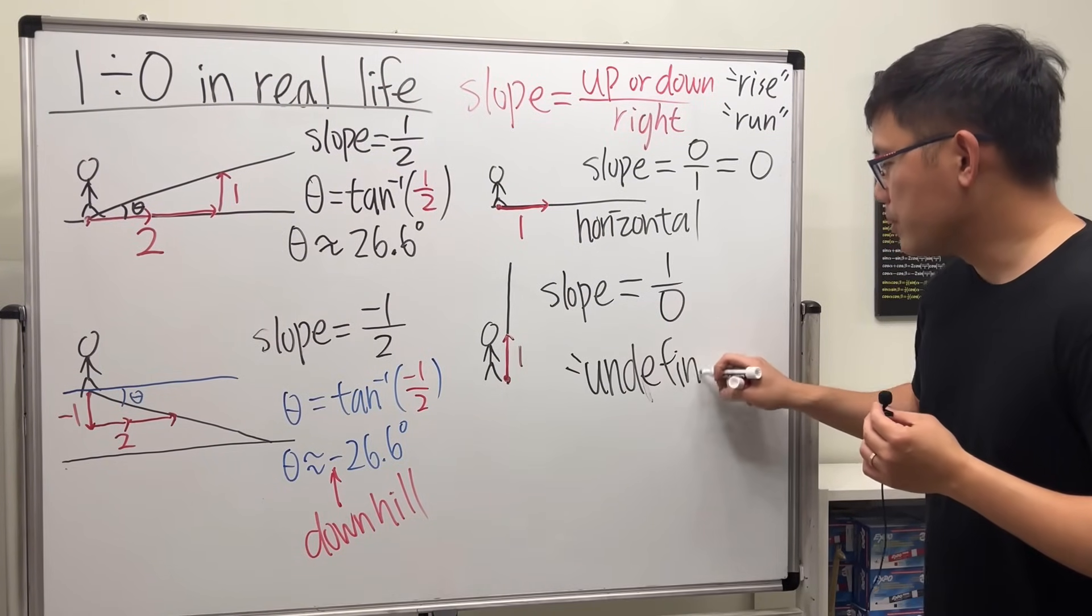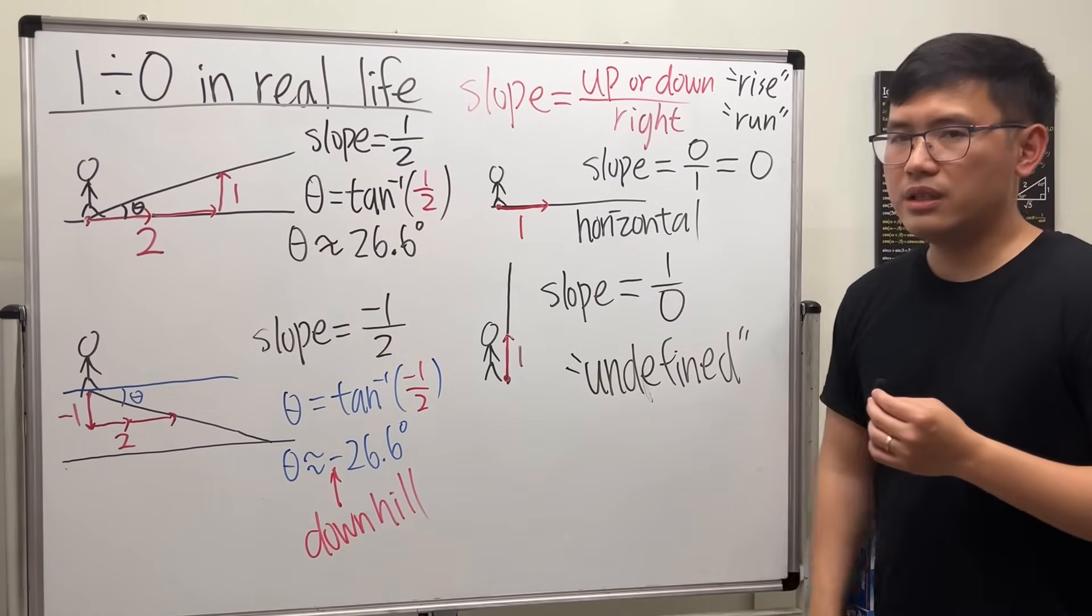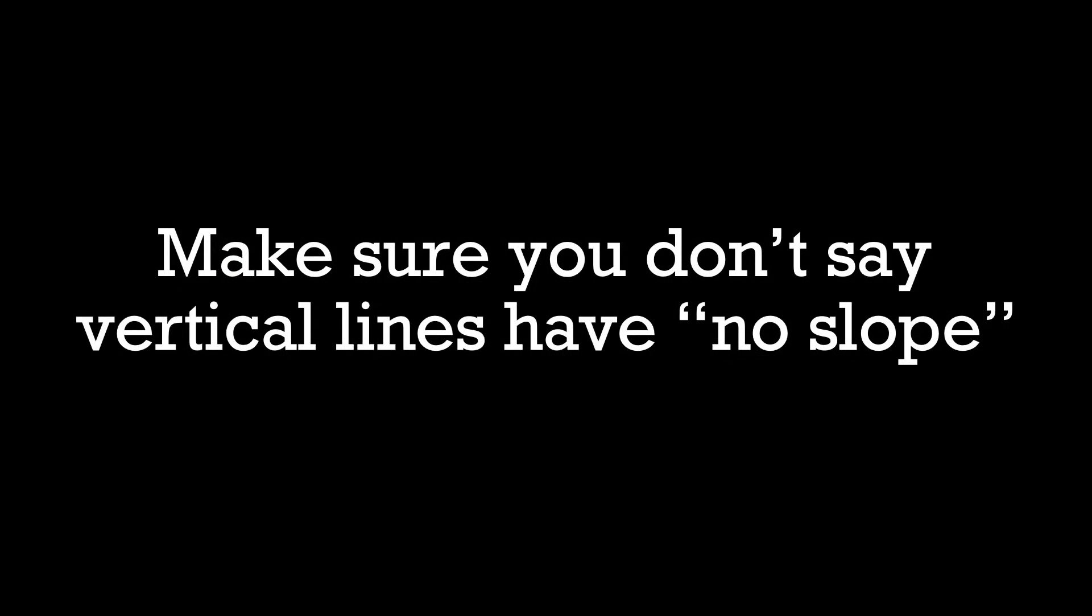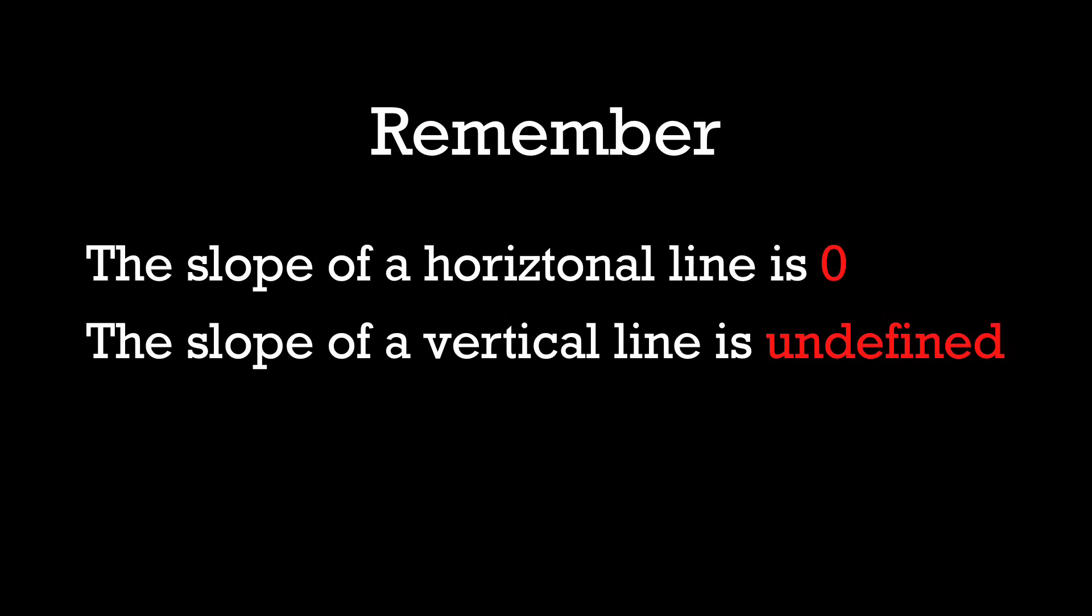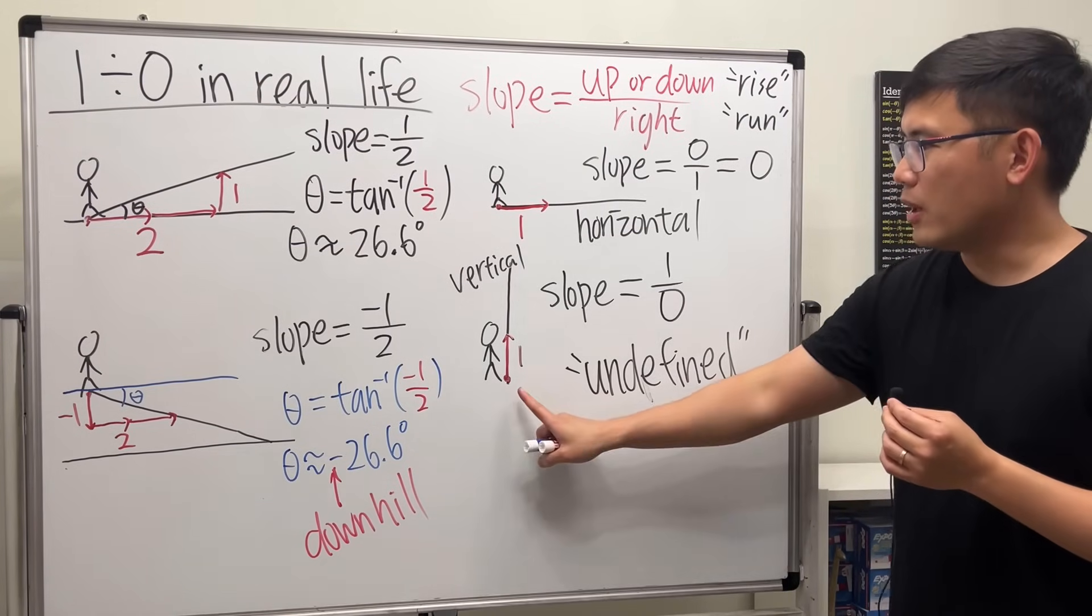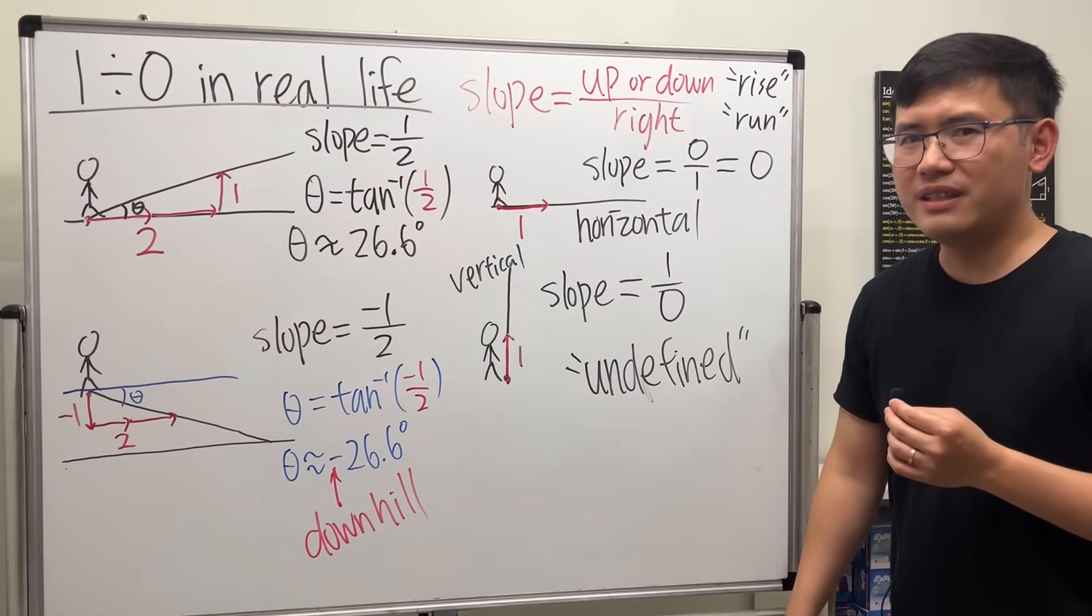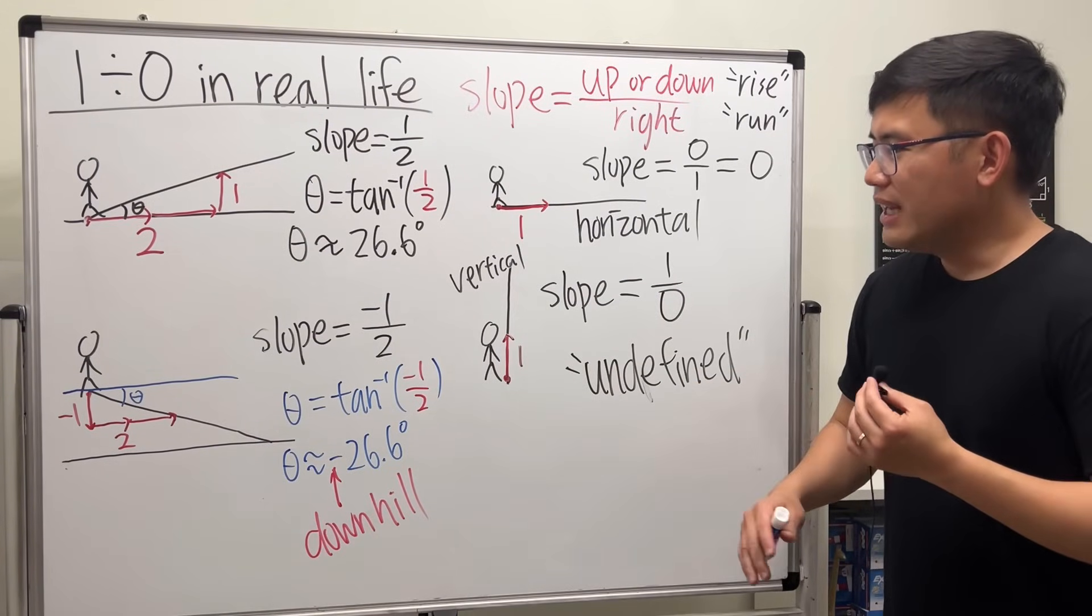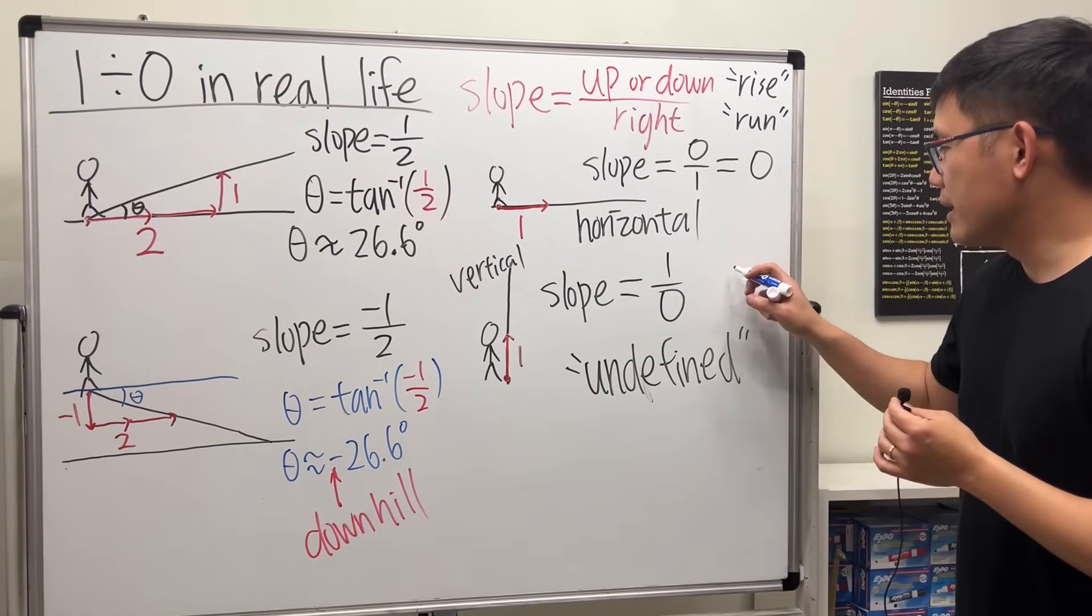So the slope of a vertical line is undefined. Some people might say the slope of a vertical line equals infinity. In this situation, I kind of agree with what they're trying to say, so I'll just say 'or infinity.'